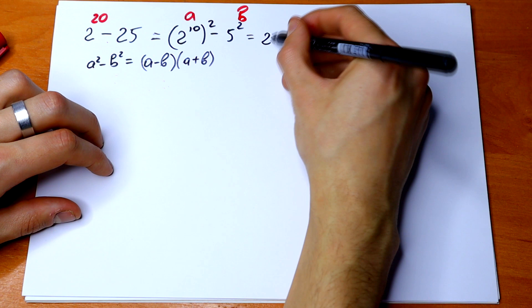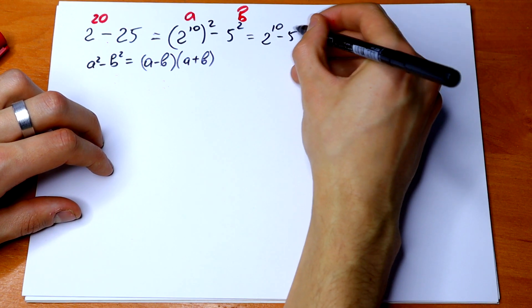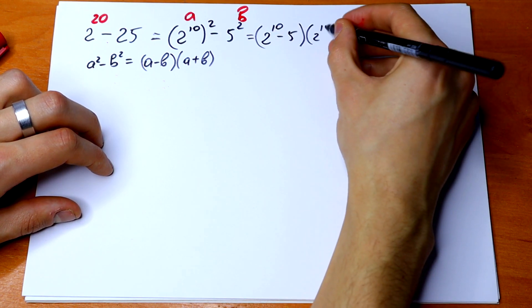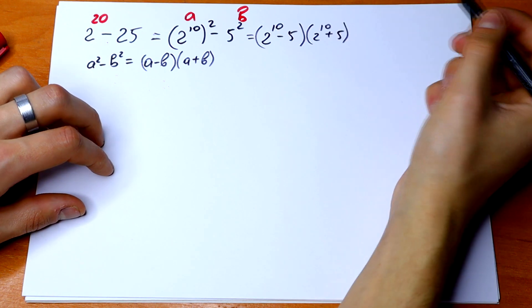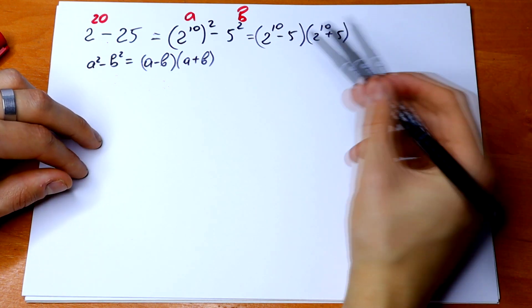So let's do this. It will be equal to 2 to the 10th power minus 5 and 2 to the 10th power plus 5. So what we're going to do next?